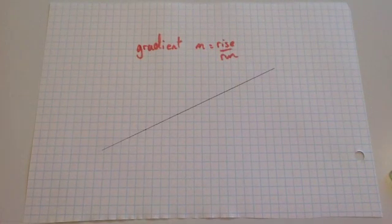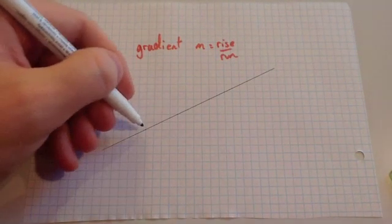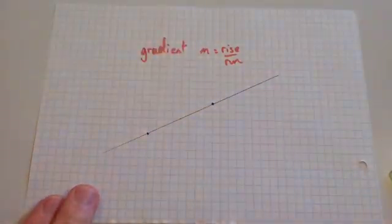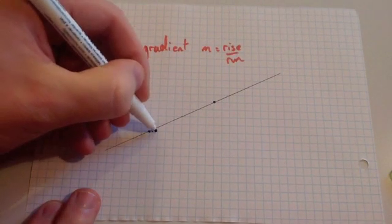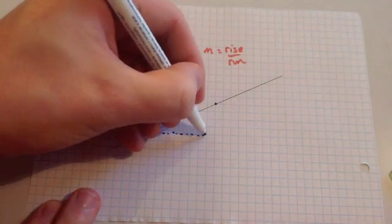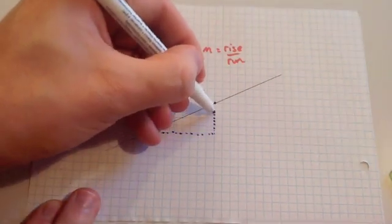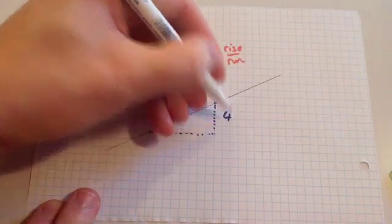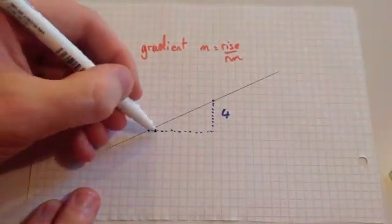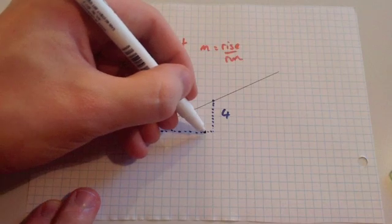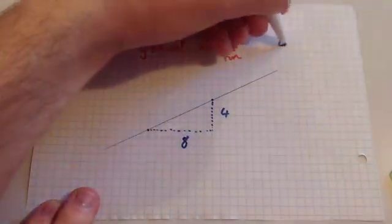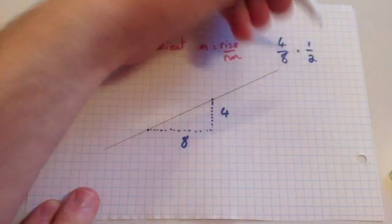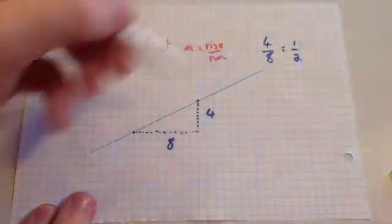This time we're going to work out the gradient of this line. Again, find two points the line clearly goes through. Draw your little right-angled triangle — go across and then up. The rise is 4, and the run is 8. So the gradient is 4 divided by 8, which simplifies to 1 over 2, or a half. The gradient of this line is a half.